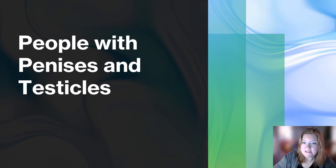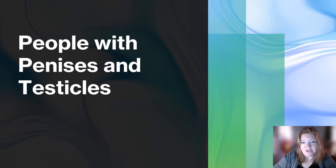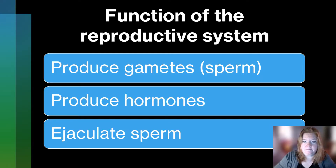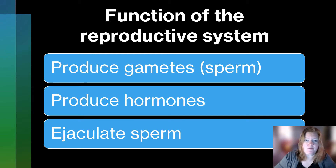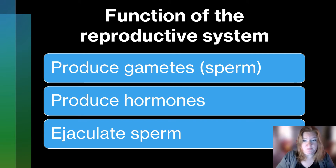It's time to talk about people with penises and testicles. This is more inclusive language, and this is how I'm going to focus. What is the function of the reproductive system in this case? Well, to produce gametes — sperm — to produce hormones, and to ejaculate sperm.